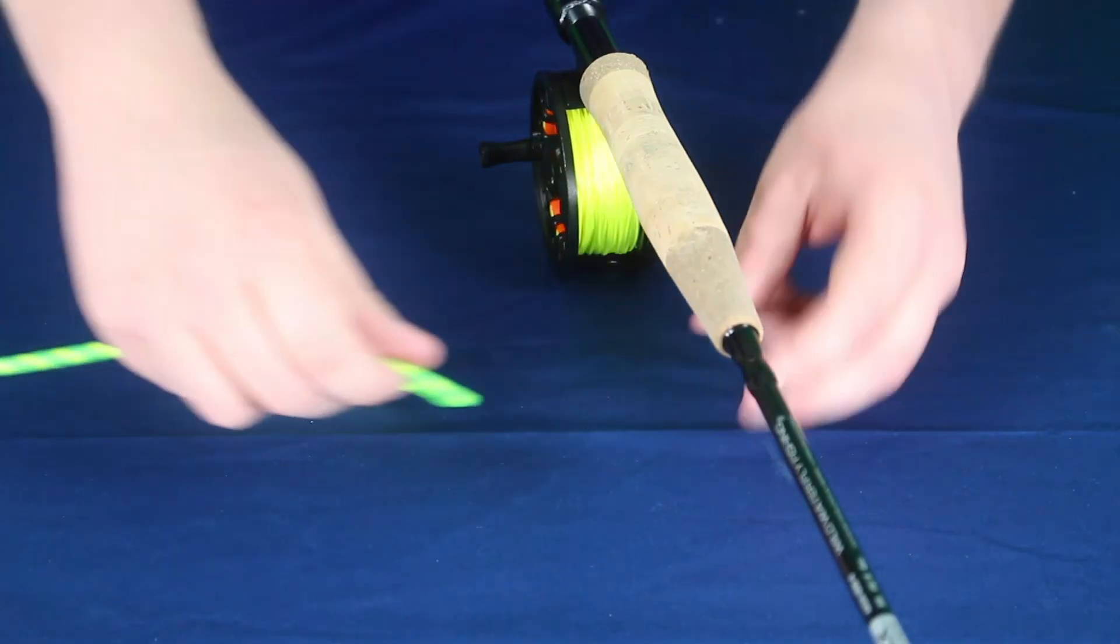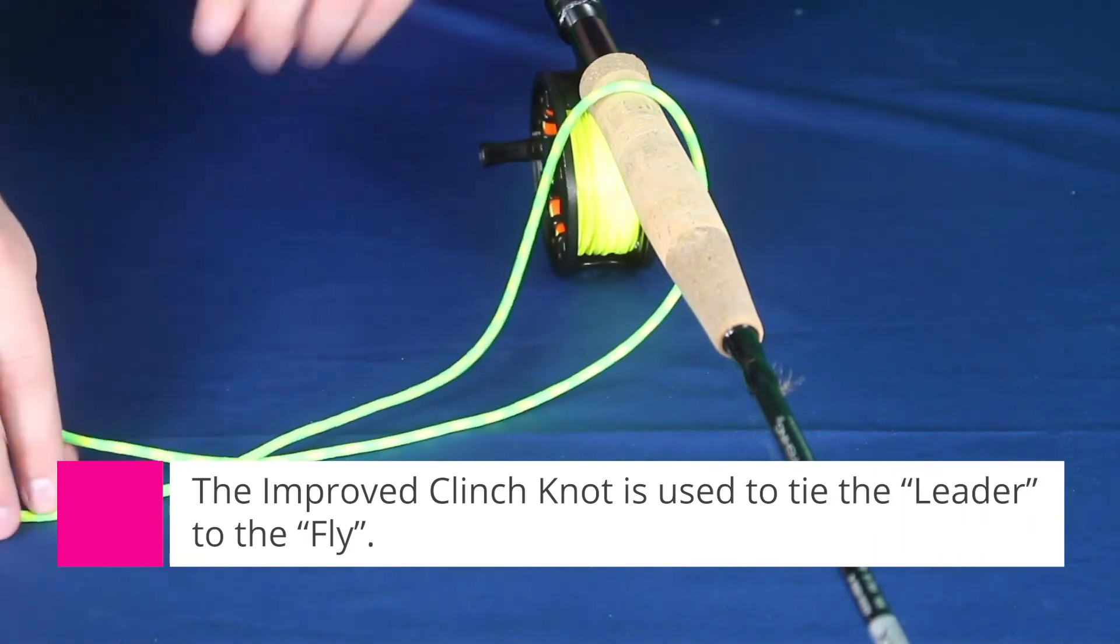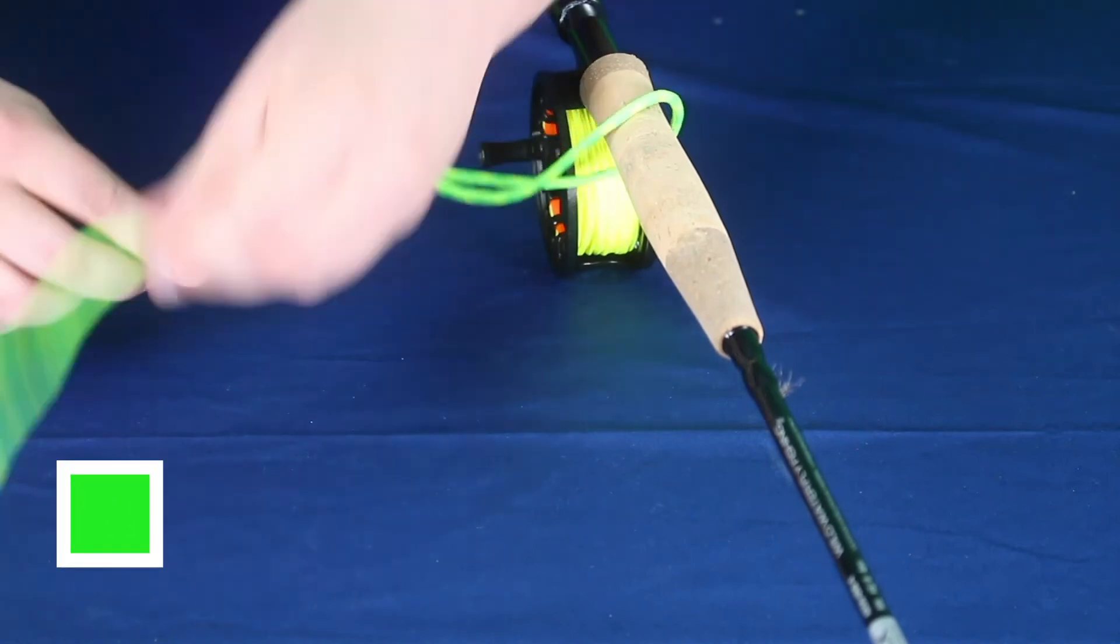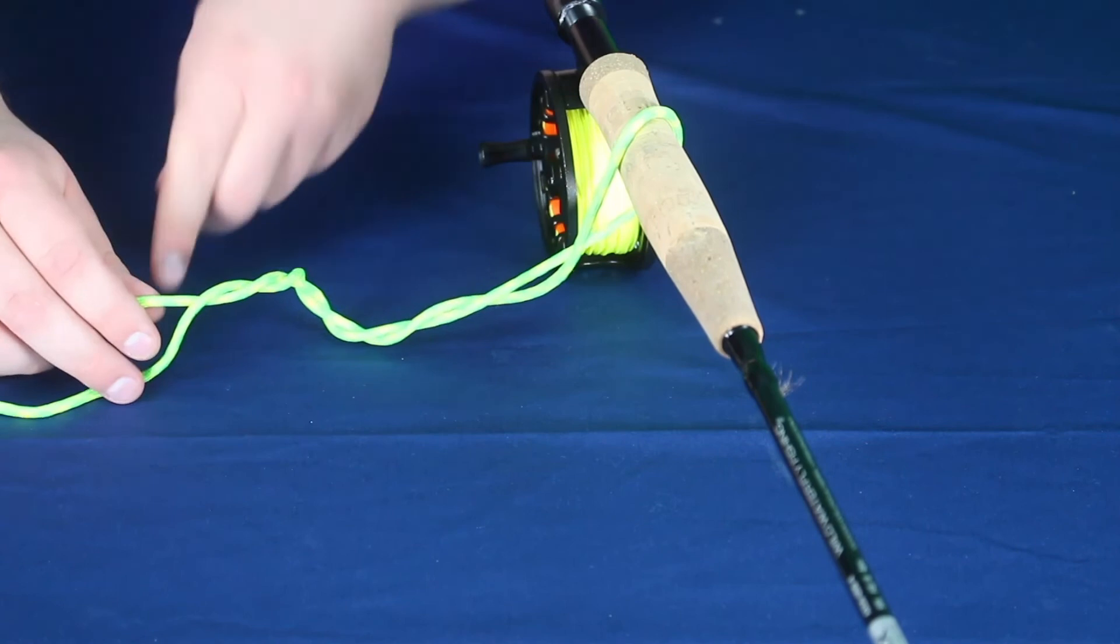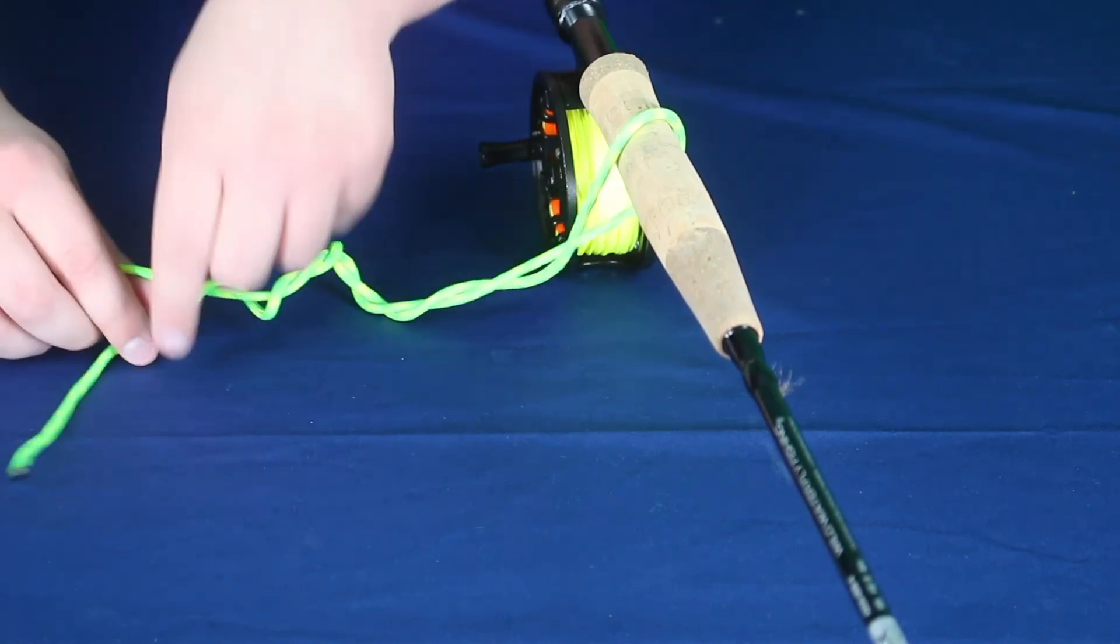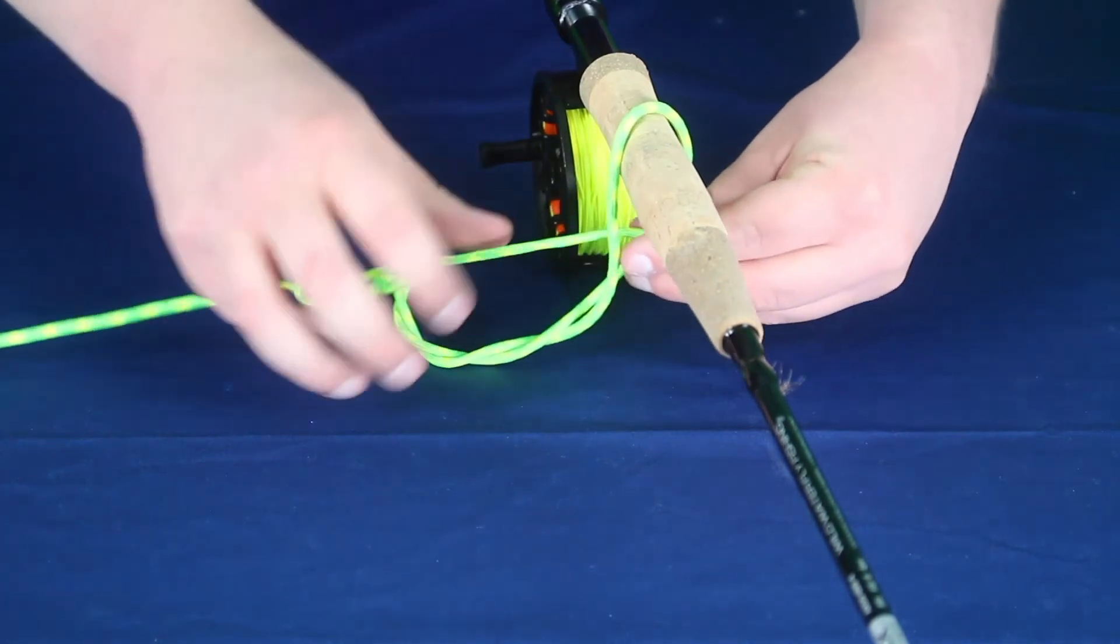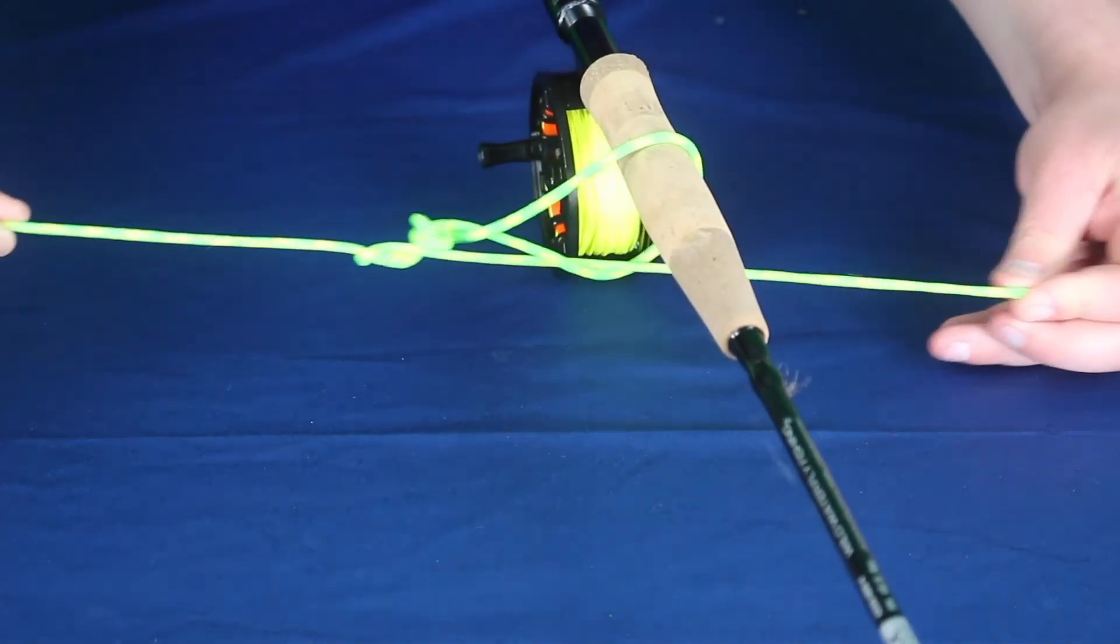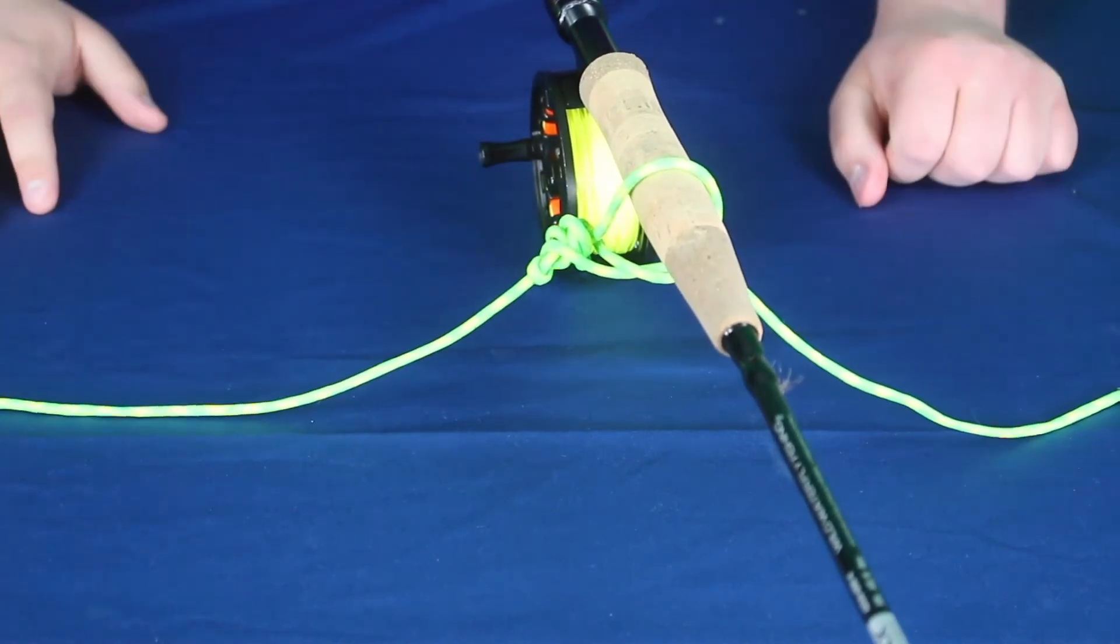Today our paracord will be used as a leader. The first thing you're going to do is you're going to wrap the leader around your rod. The next thing you're going to do is you're going to take one end of that leader and you are going to wrap it several times around its other side. After that, you're just going to come back through and cinch it up. And that's how you tie your leader to your fly using an improved clinch knot.